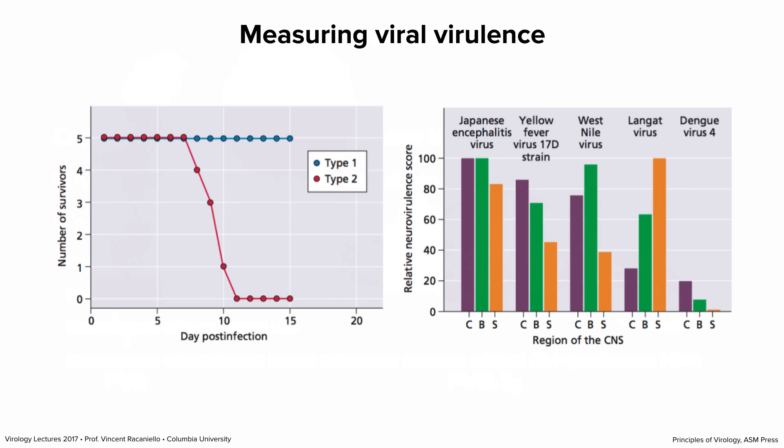On the right is a more involved way to measure viral virulence — what we call a neurovirulence score. Mice were inoculated with five different flaviviruses, and we're looking at different parts of the brain: cerebellum, brain stem, and spinal cord. Tissue sections are taken from each part, looked at under a microscope, and a pathologist assigns a number to the lesions caused by infection — usually a scale of 0 to 4, where 0 is no lesions and 4 is extensive. You can see that these viruses differ in their ability to cause lesions, and the relative score combines all the pathologist's observations from different brain sections.